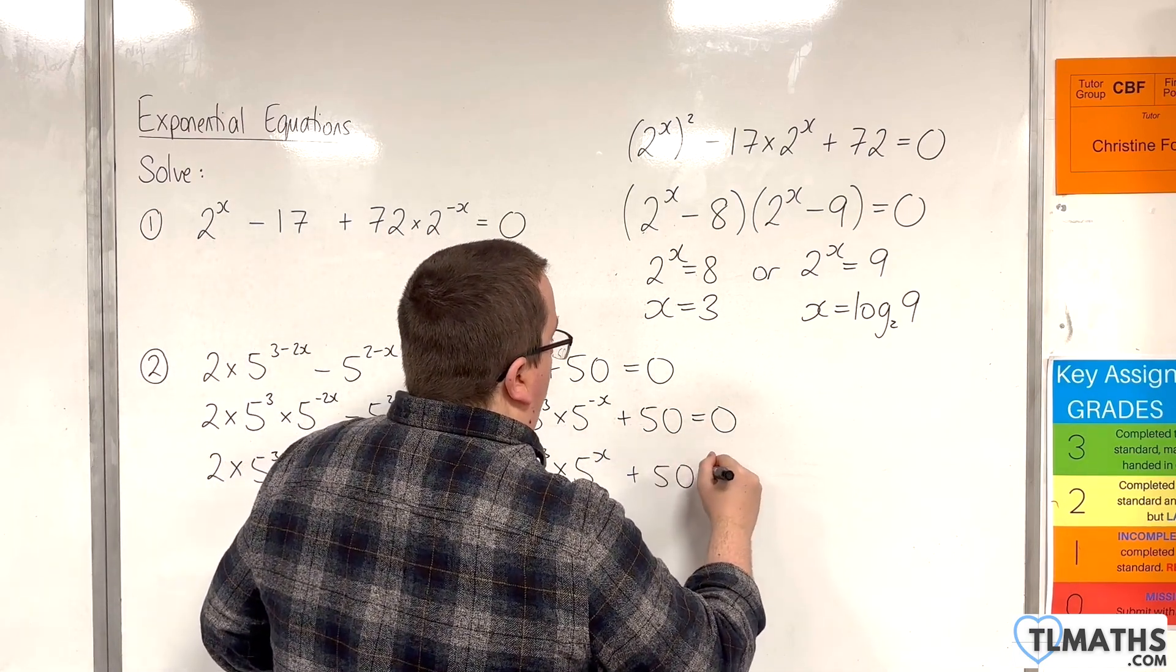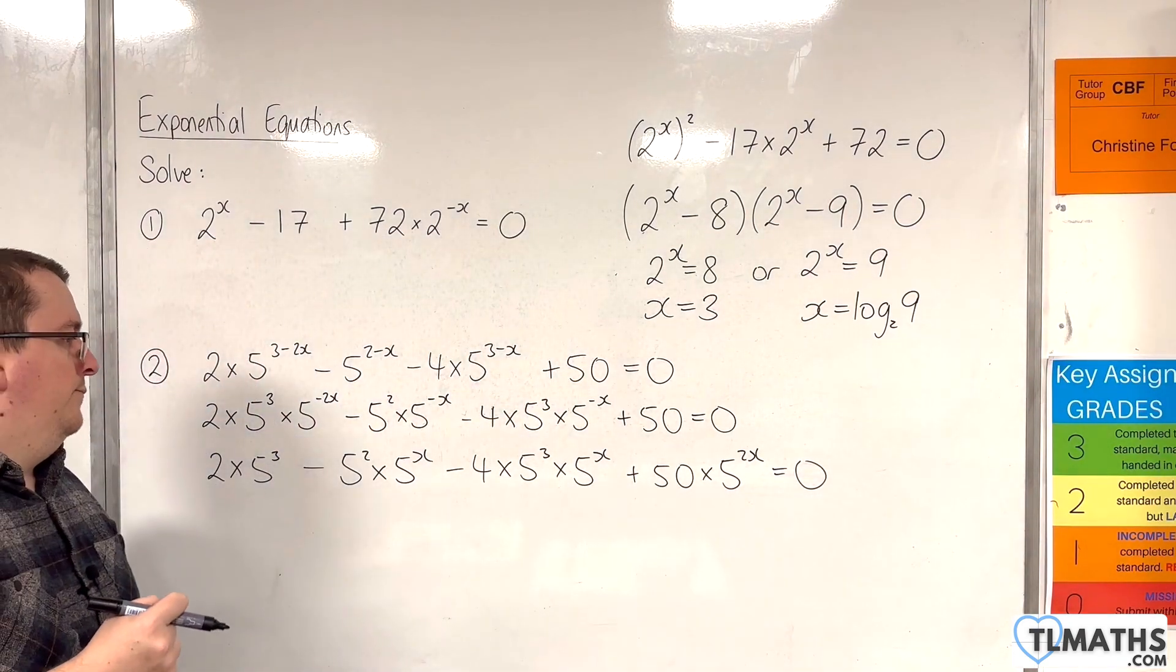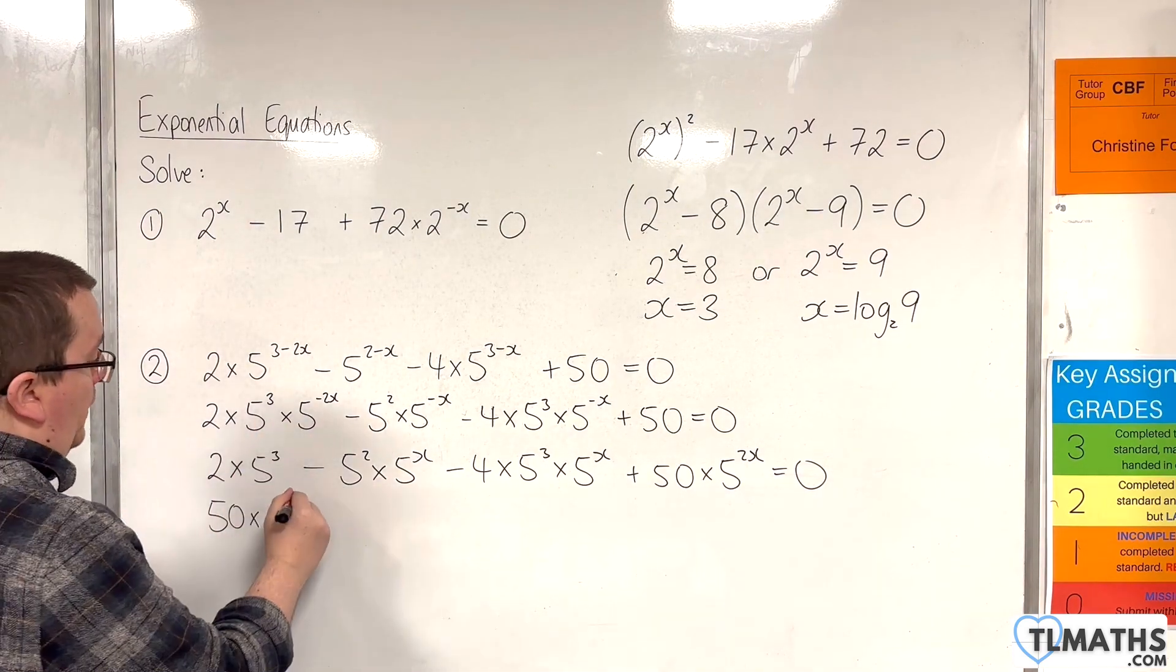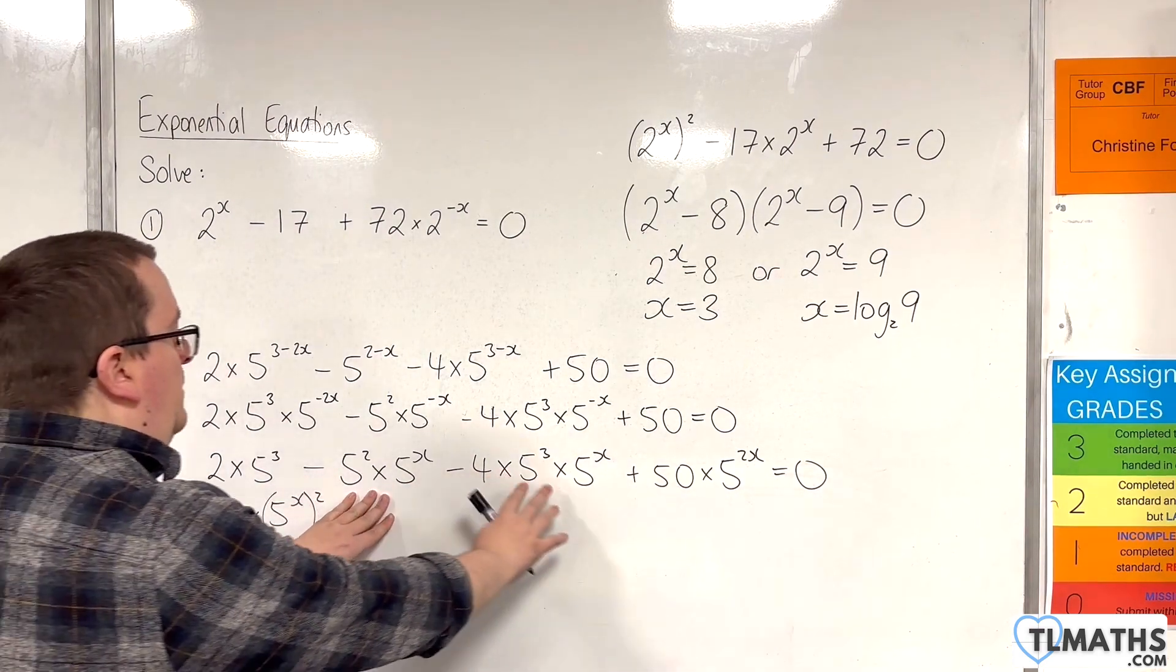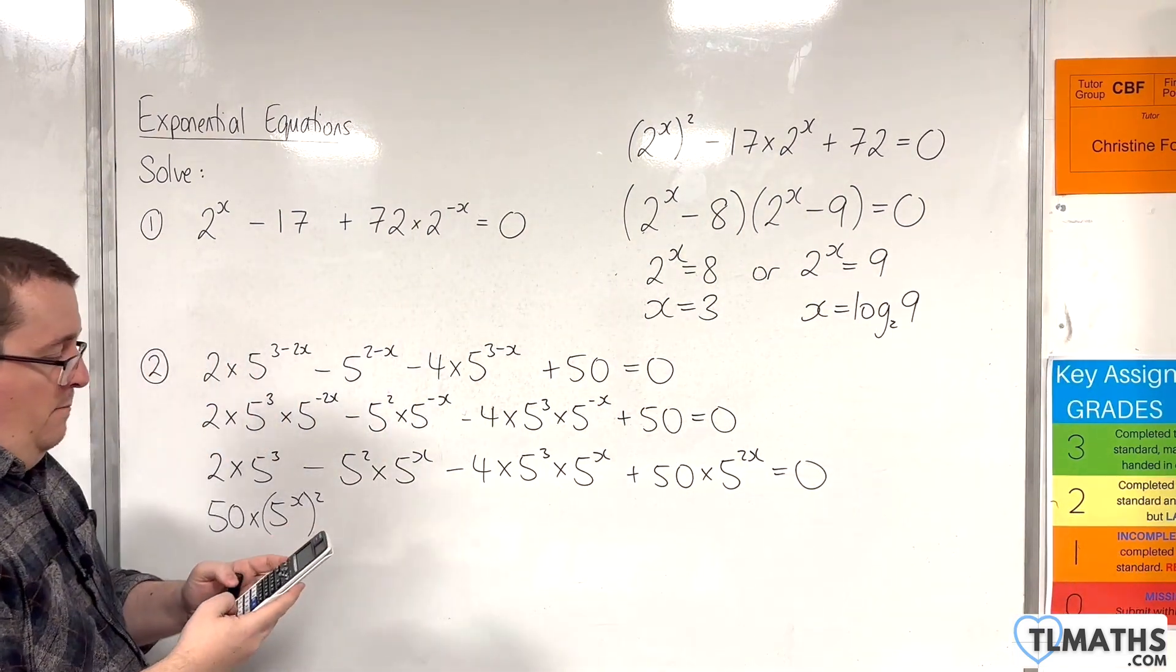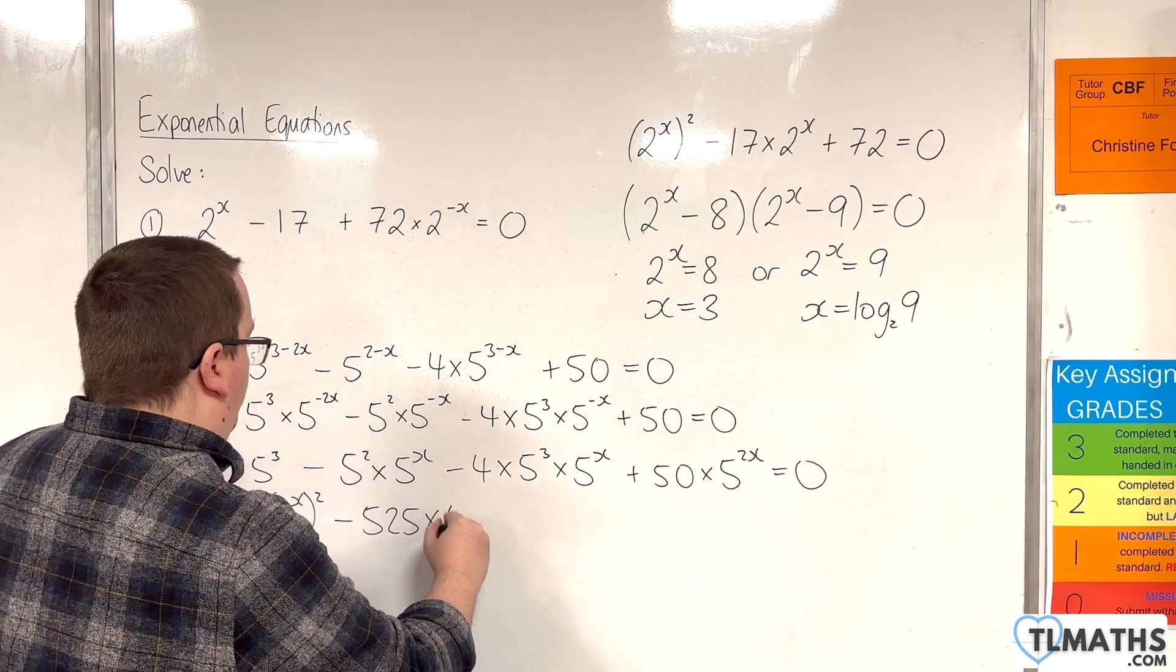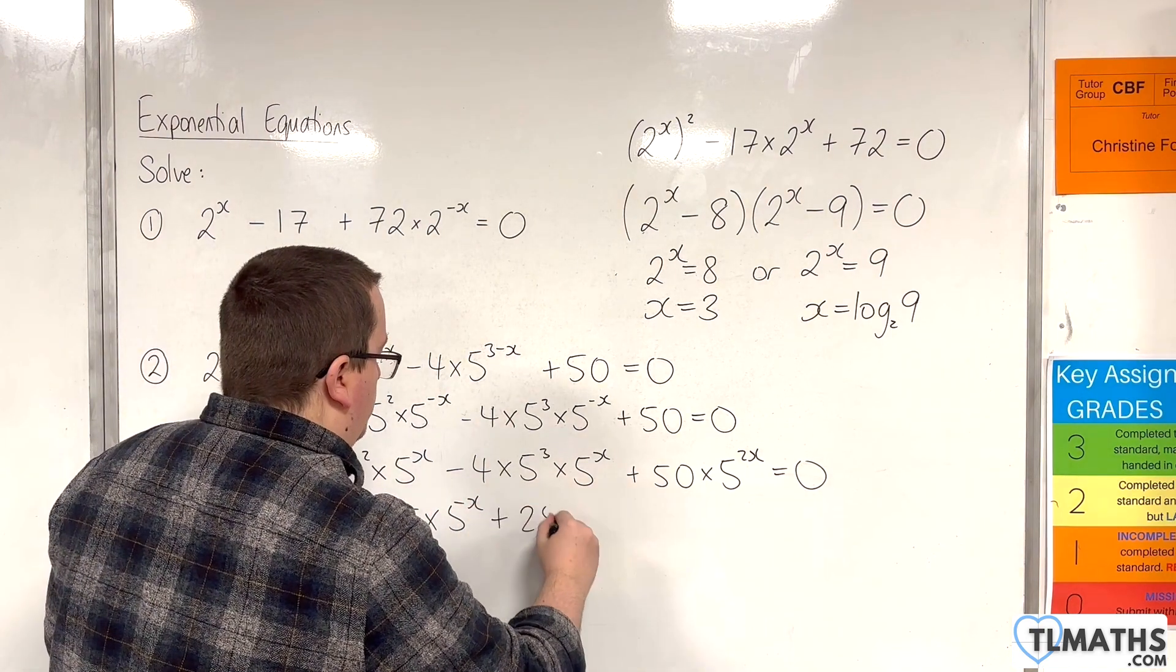Now, I've got the plus 50·5^(2x) as well. So, don't forget, we're multiplying that by 5^(2x). And so, we have this. So, let's tidy this up. We have 50·5^(2x). So, 50·5^(2x). And 5^(2x) is, of course, 5^x squared. So, that is that term there. Now, we've got these terms here. They've both got the 5^x. So, we've got minus 5², then take away 4·5³. And that gets us minus 525 lots of 5^x. And then we've got 2 lots of 5³. So, 250 on the end equals 0.